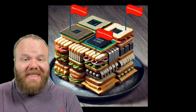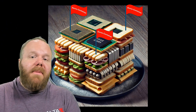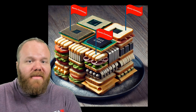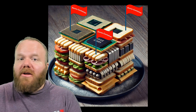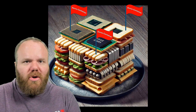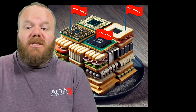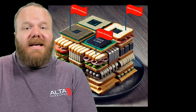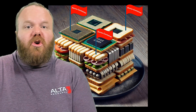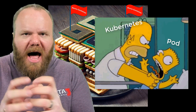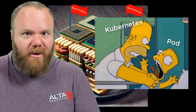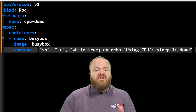That's why we have limits. Limits describe the maximum of that resource that your pod's container is able to use. So if our pod tries to consume more than the limit, Kubernetes will throttle the pod, forcing it to slow down.